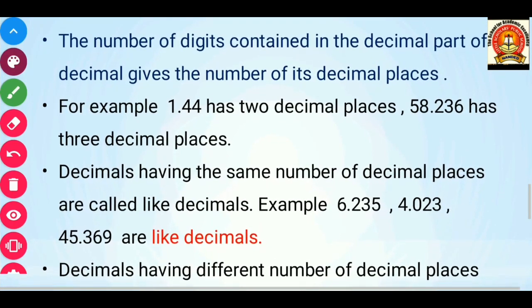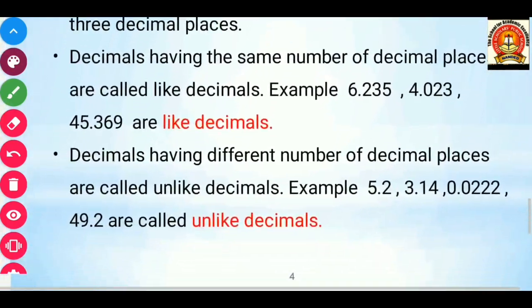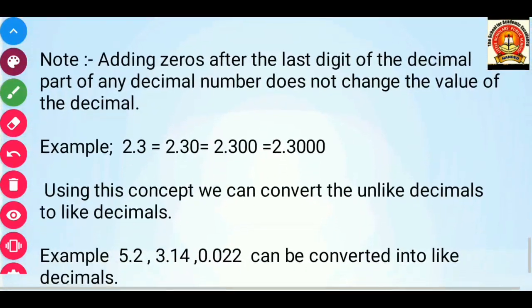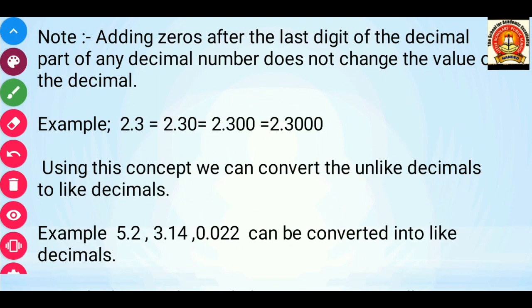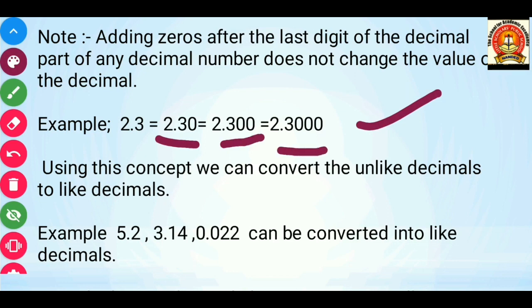The number of digits in the decimal part is simply the number of decimal places. One important property is that adding zeros after the last digit of the decimal part does not change the value of the decimal. For example, 2.3 can be written as 2.30, 2.300, and so on. It doesn't matter if you add such zeros. Using this concept, we can easily convert unlike decimals into like ones.